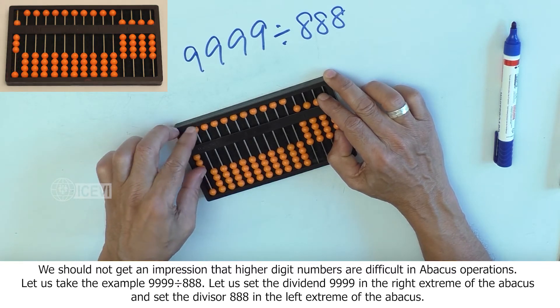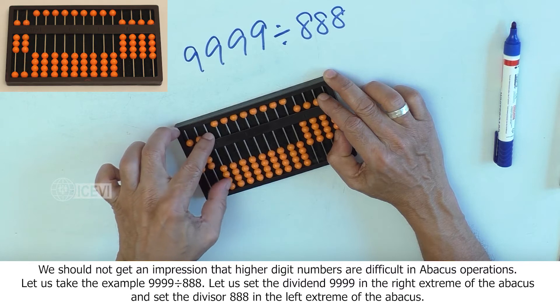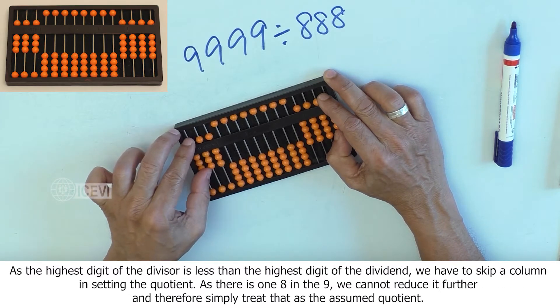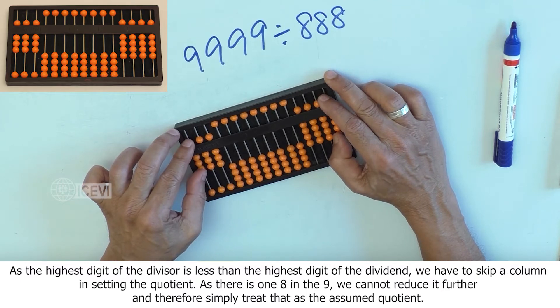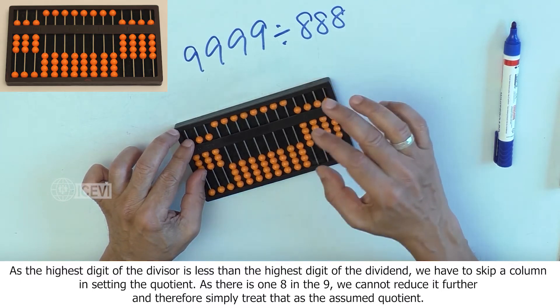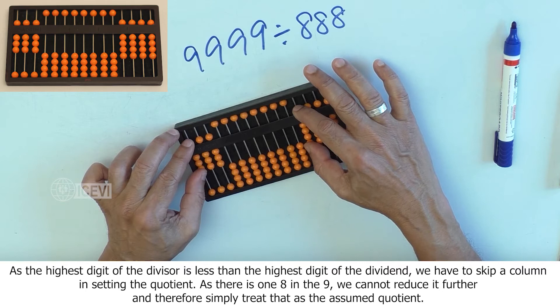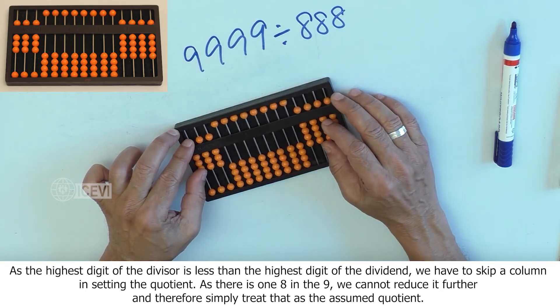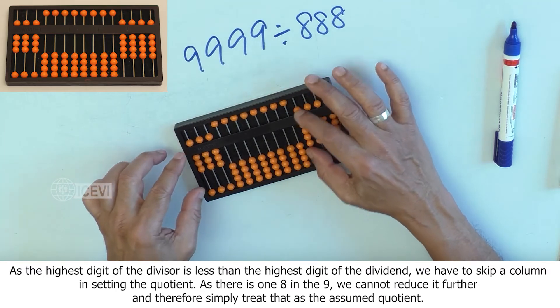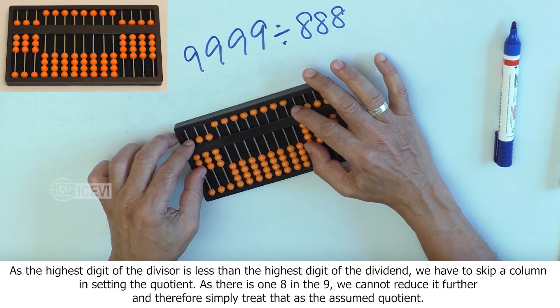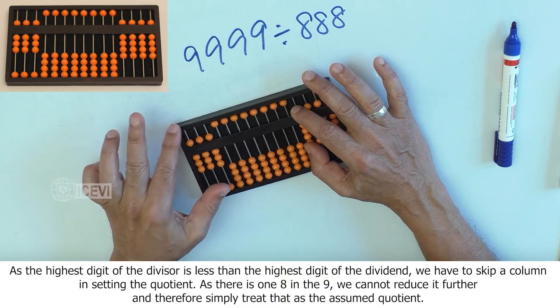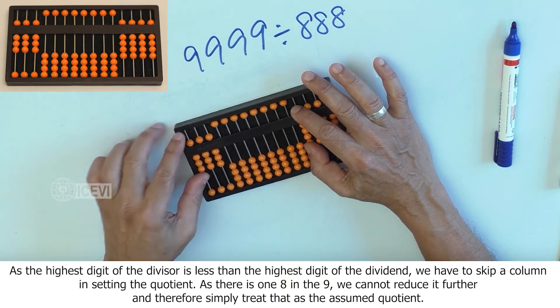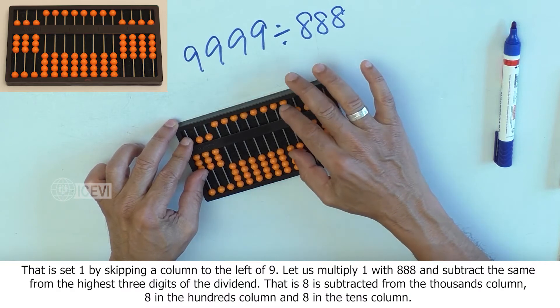As the highest digit of the divisor is less than the highest digit of the dividend, we have to skip a column in setting the quotient. As there is one 8 in 9, we cannot reduce it further and therefore simply treat that as the assumed quotient. Set 1 by skipping a column to the left of 9.